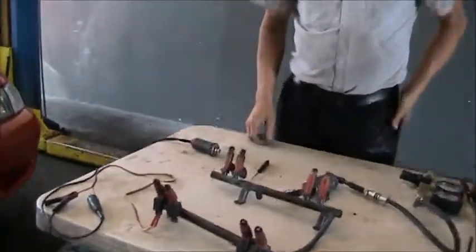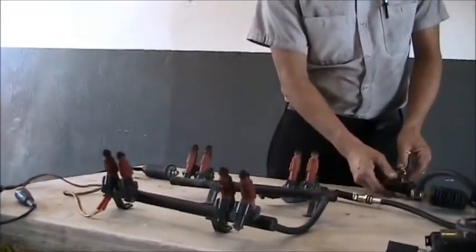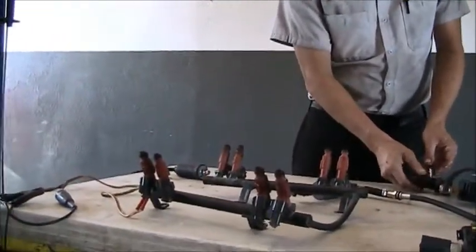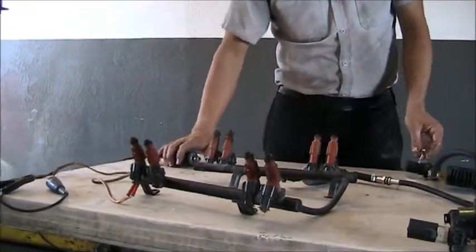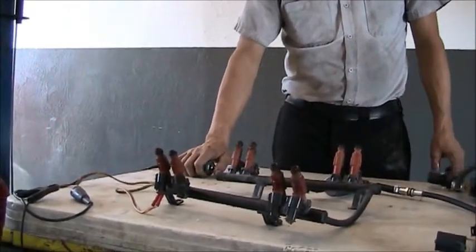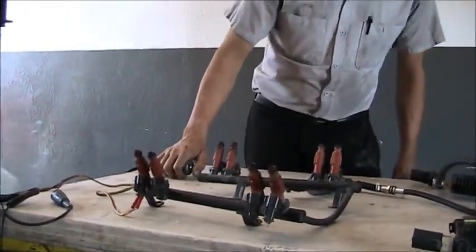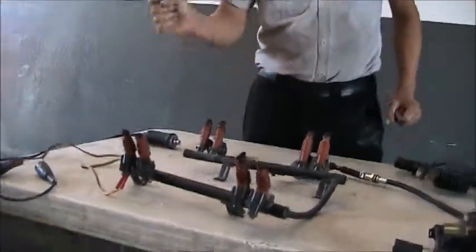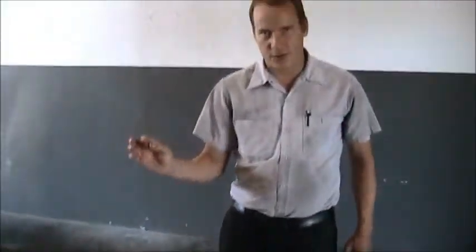When the injector is in the car and operating, the on-time is only in milliseconds, so obviously it doesn't shoot a stream that far. Other types of fuel injectors will often create a cone-shaped spray pattern rather than a direct stream.